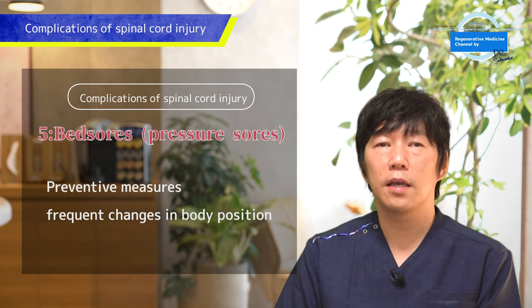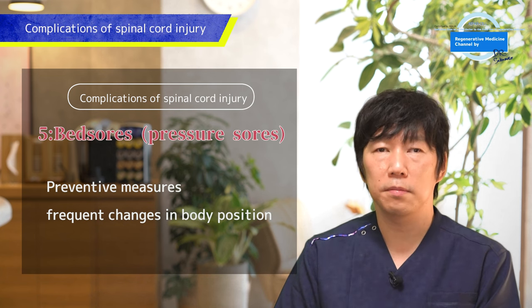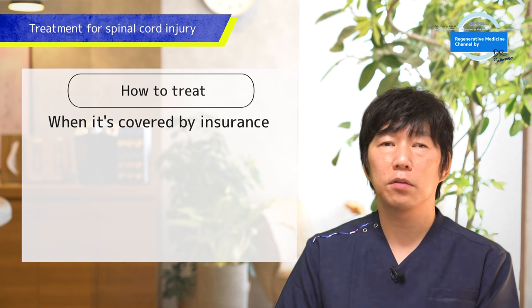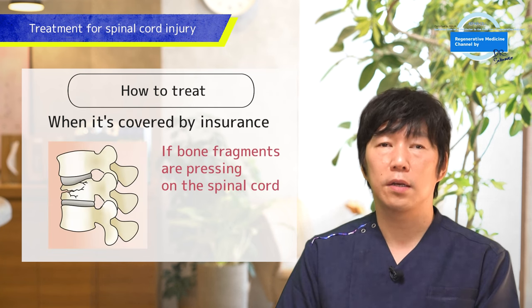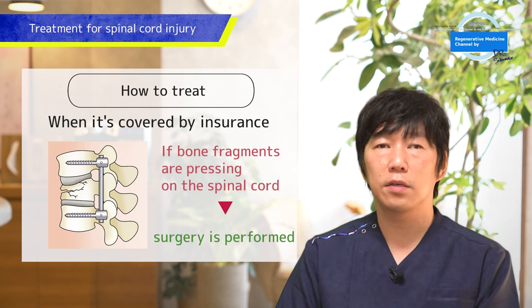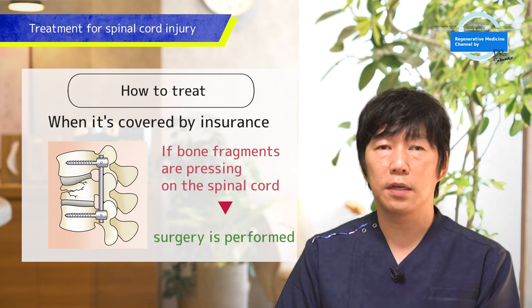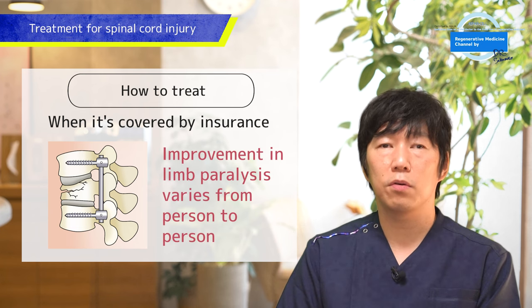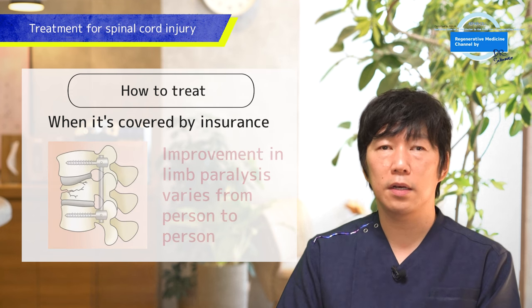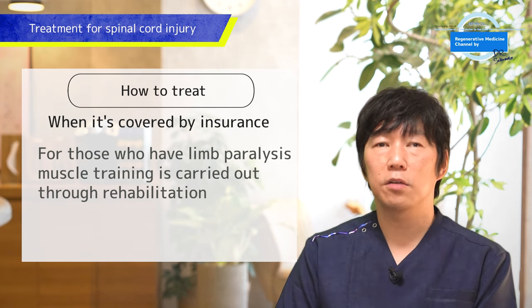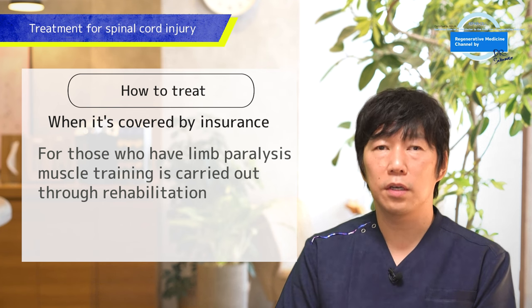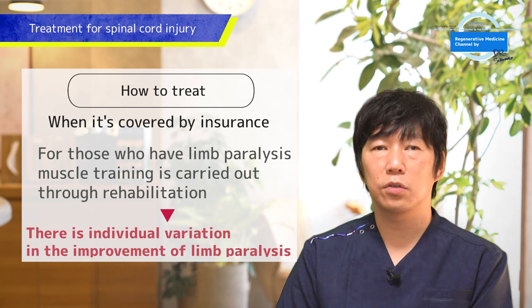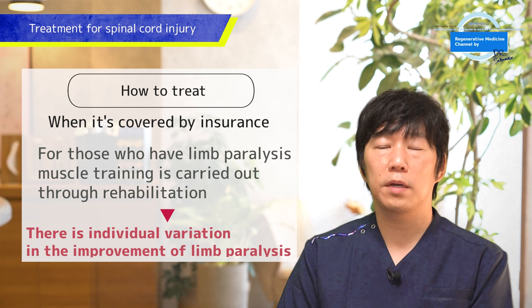As for current treatment within insurance healthcare options, if spinal bones are fractured and bone fragments are pressing on the spinal cord, immediate surgery is performed to release the compressed nerves. However, there is individual variation in whether the nerves return to normal and sensation comes back. If there is paralysis or loss of sensation, muscle training and rehabilitation will be carried out afterward, but paralysis and sensory loss can still persist as a consequence of spinal cord injury.